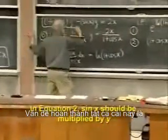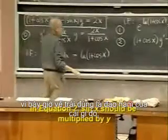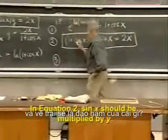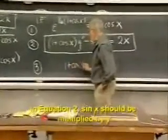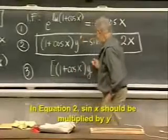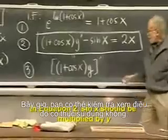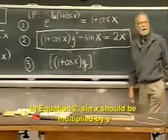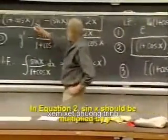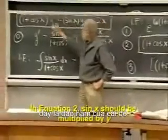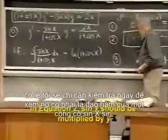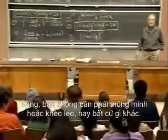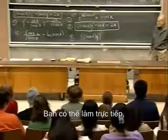But the point is that now the left-hand side is exactly the derivative of something. The left-hand side should be the derivative of one plus cosine x times y, all prime. You can check: it's 1 plus cosine x times y prime plus minus sine x times y. If you had thought to check right away whether this is the derivative of one plus cosine x times y, you would have saved that work — but you don't have to be brilliant. You follow your nose.